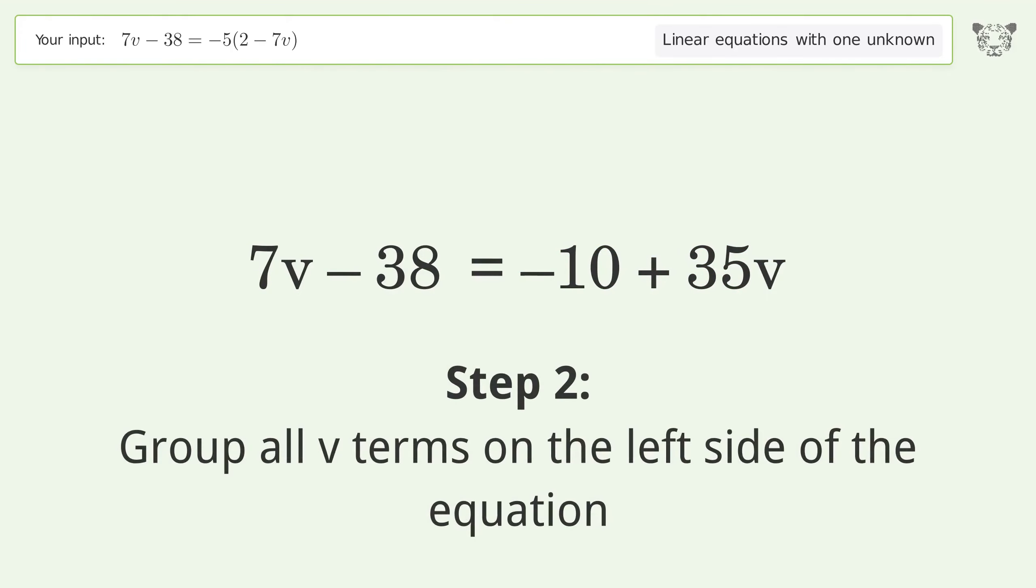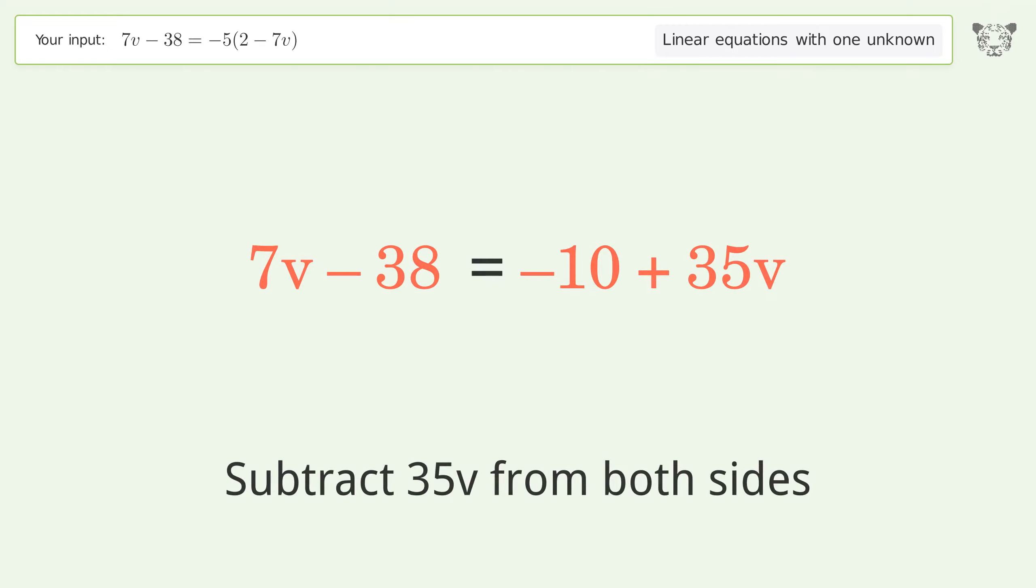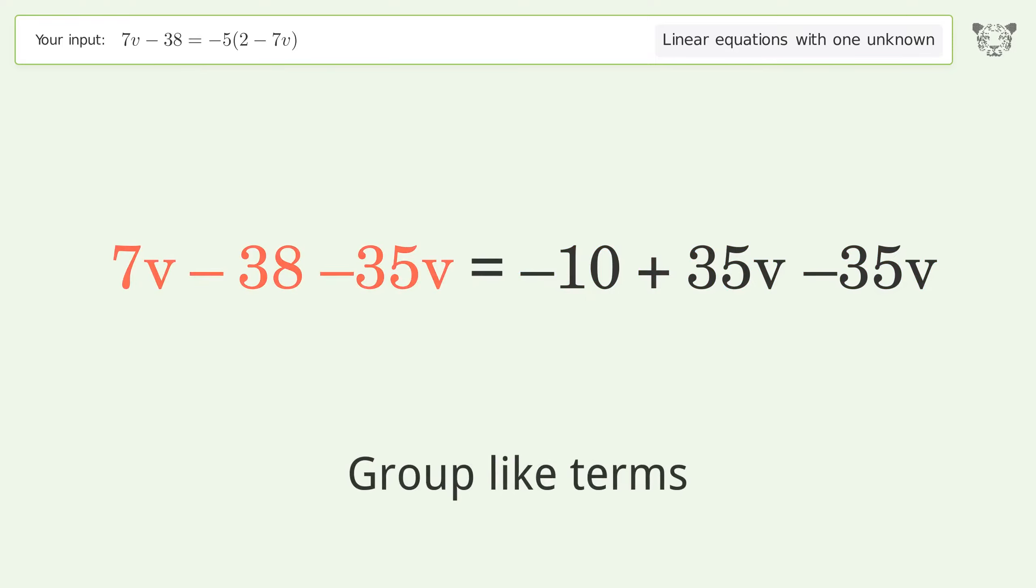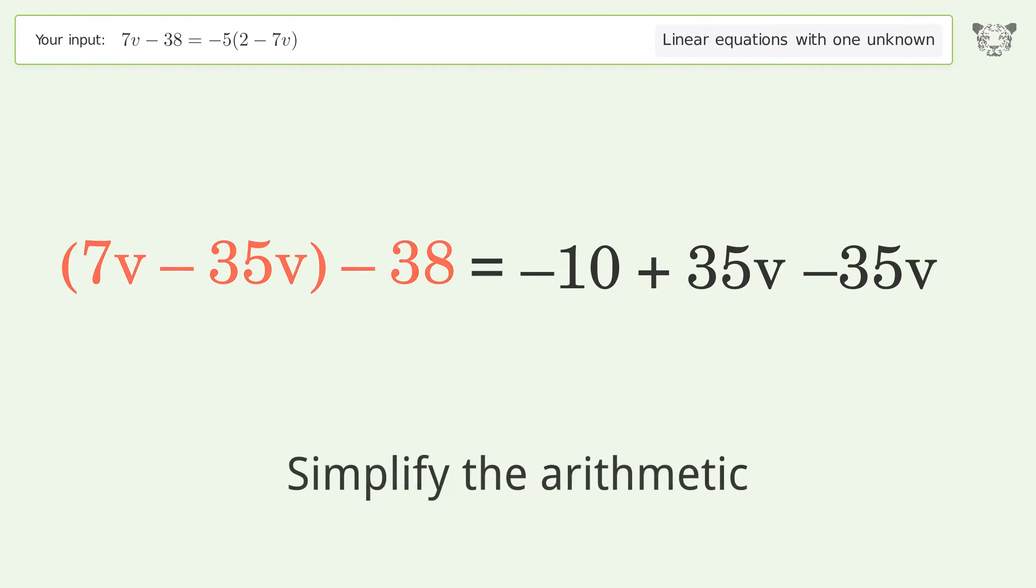Group all v terms on the left side of the equation. Subtract 35v from both sides. Group like terms. Simplify the arithmetic.